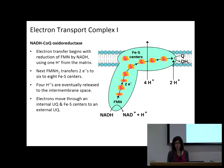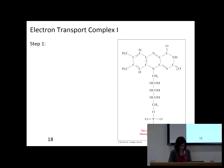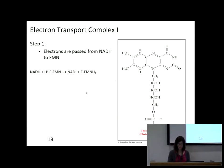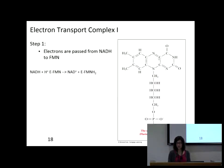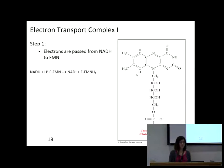Coenzyme Q picks up the hydrogens — the hydrides — so those hydrogens are holding those electrons. FMN is one of the new electron carriers: it picks up two hydrogens. I'm not going to ask you the structure — just know that FMN is in complex 1. FMN is another coenzyme that can pick up and carry hydrides, electrons. I just want you to know that it's a coenzyme that is carrying electrons.